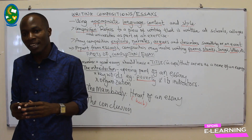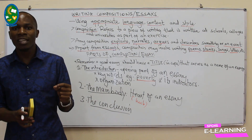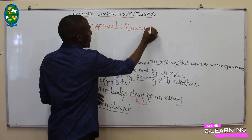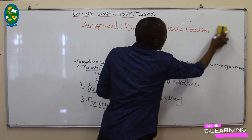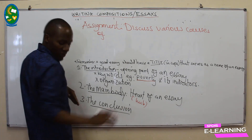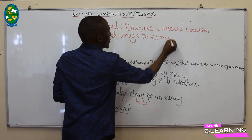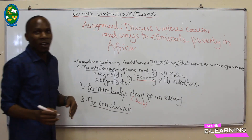Now, as an exercise, the question is going to be written on the blackboard and students will be required to attempt it or give comments on it. The question, as it has appeared in our example, is: 'Discuss various causes and ways to eliminate poverty in Africa.' You are required to try this question so that you can see if you have understood how we organize our essay from introduction, the main body, and the conclusion.